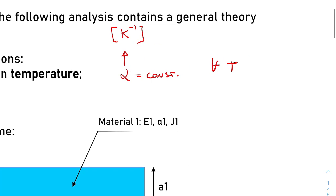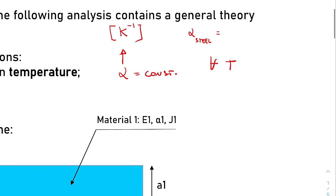For a steel, I can give you this as an example. Its value is 1.2 times 10 to the power of minus 5 Kelvin to the power of minus 1.